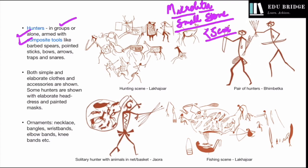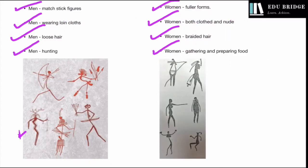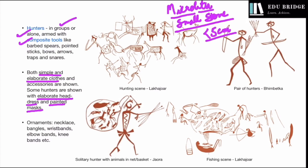Microliths were attached to arrows and spears as depicted in the paintings. During this period, man did not have the knowledge of metal, so no metal tools are seen. Both simple and elaborate clothes have been shown, along with accessories. Hunters were shown wearing elaborate headdresses, and some had painted face masks. Ornaments included necklaces, bangles, wristbands, elbowbands, kneebands, etc.